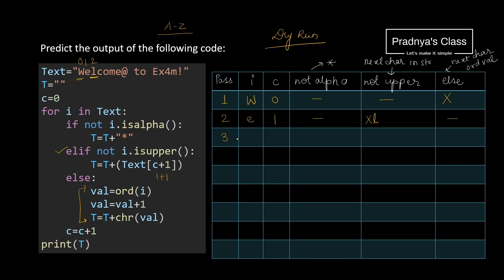Moving ahead to the third pass, the next character is L. The value of C becomes 2. It does not satisfy the first criteria, so we come to the second criteria. We take the next character in the string. After L, we have C. In the same way, the same concept will get applied to the remaining characters — C, O, M, E — in the 4th, 5th, 6th, and 7th passes.